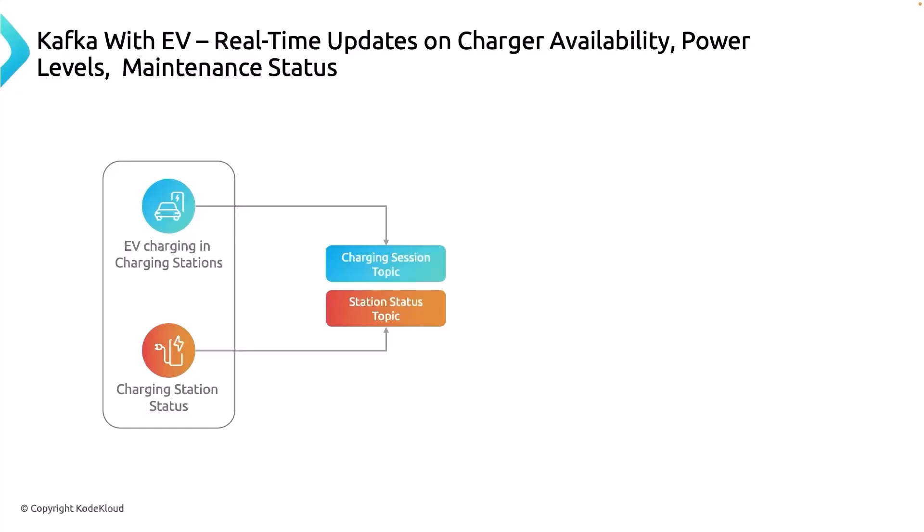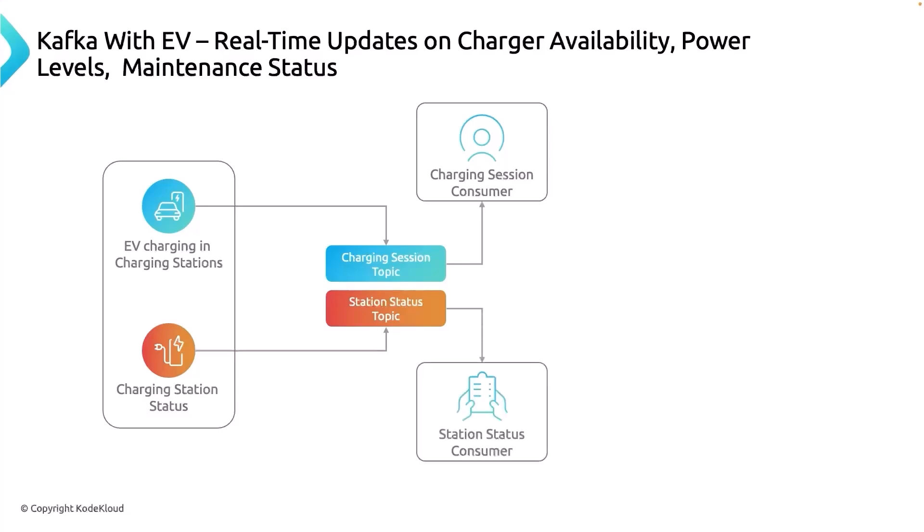This information flows via IoT devices — sensors that sense changes and trigger events, sending them to Kafka. When somebody starts charging their EV, we get an event and start a counter for how long they have been charging.